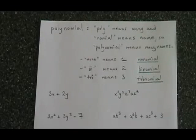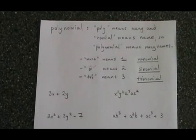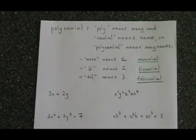In our high school polynomials course, we have to know the meaning of the word polynomial. Poly means many, and nomial means name. So the word polynomial means many names.